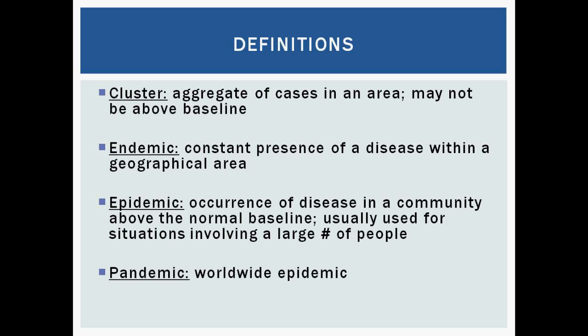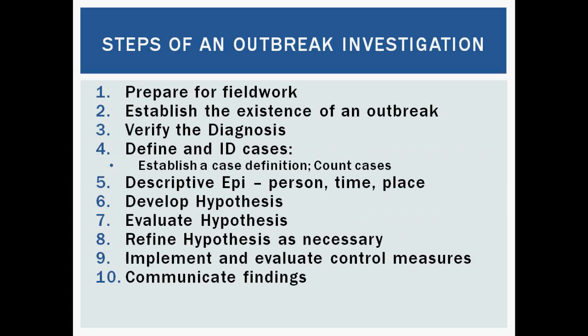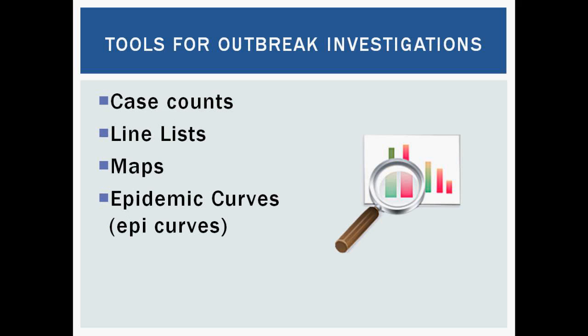For every investigation, these are the steps. They don't necessarily always happen in order, and sometimes you might have to repeat a step, or some steps might be done earlier in the investigation. For example, step number 10 — communicate the findings — is something you might do right after you prepare. Remember that these steps are just our basis and what we can kind of go off of during an investigation. Line lists, epi curves, and maps are some of the key tools we talked about in our second webinar. We're going to look at epi curves again today and also look at an example of a map that was used during an investigation.